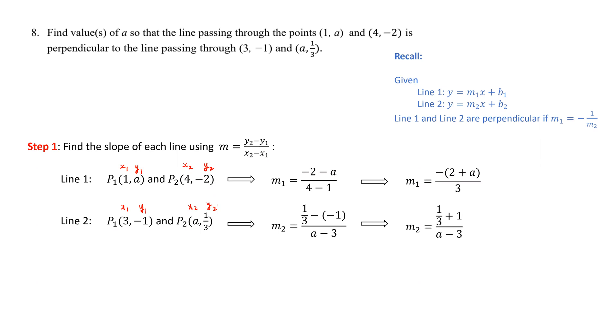In the numerator, we can combine 1/3 and 1 to get 4/3. Then we can multiply both numerator and denominator by 3 to eliminate the fraction. So the slope of the second line is 4/(3(a - 3)).